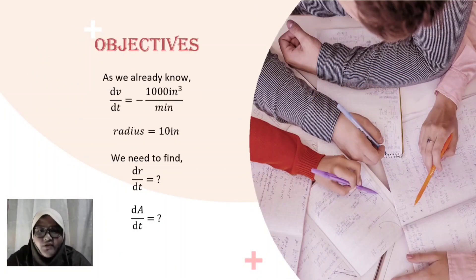As we already know, dv/dt is negative 1000 inch cube per minute. Radius is 10 inch. Now, we need to find dr/dt and dA/dt.